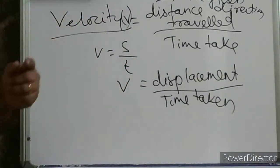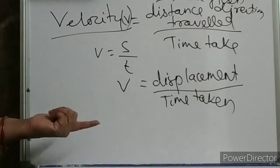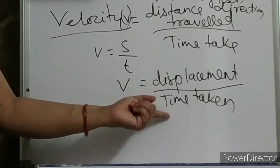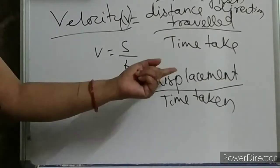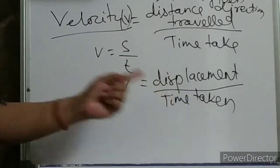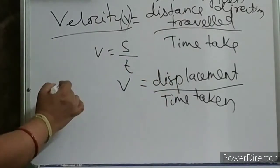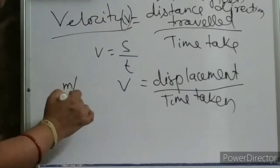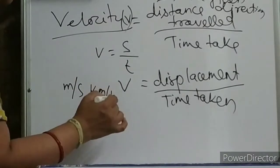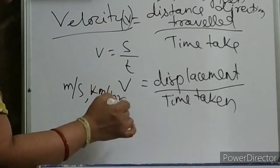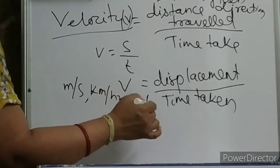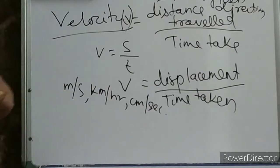What is the SI unit of velocity? Same as displacement: metre per second, kilometre per hour, or centimetre per second. So either metre per second, kilometre per hour, or centimetre per second — just like your speed.